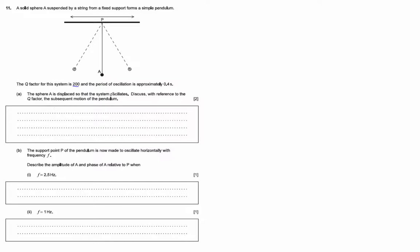Well, a Q factor of 200 means it's going to go 200 times before stopping. So you would say the system is lightly damped.